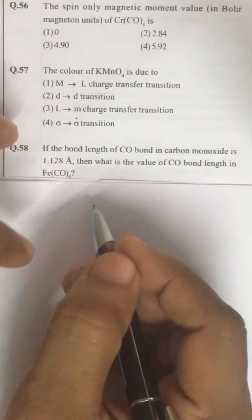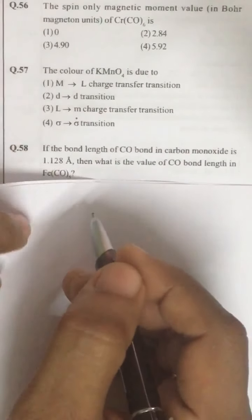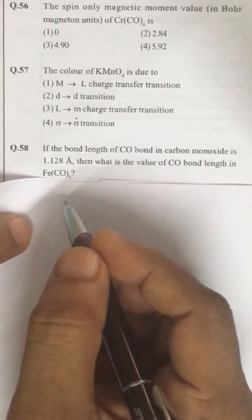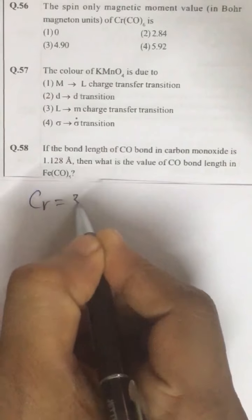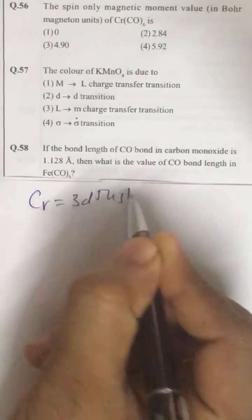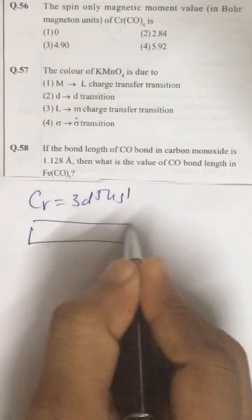Question number 56. The spin only magnetic moment for Cr(CO)6. Look at Cr, it is 3D5, 4S1, and if you look at the configuration...